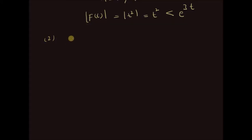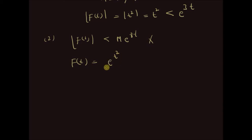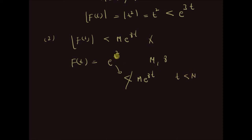Now let us look at an example where f of t is not of exponential order — that is, we cannot find values m and gamma for which f of t is less than m times e to the power gamma t. This is violated for f of t equal to e to the power t squared. There is no value of m, gamma for which this is less than m times e to the power gamma t. For certain values of t less than n, it may be true that e to the power t squared is less than m times e to the power gamma t, but after certain values of time t, this inequality does not hold.